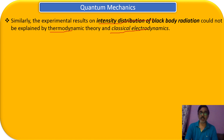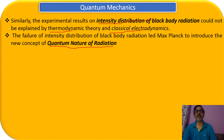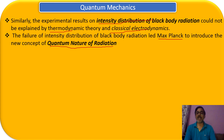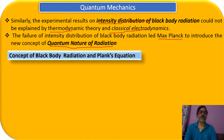The failure to explain the intensity distribution of the black body radiation led Max Planck to introduce the new concept of the quantum nature of radiation. A new type of radiation was introduced — the quantum nature of radiation. Max Planck is called the father of quantum mechanics, because that was the beginning of a new theory for subatomic particles.